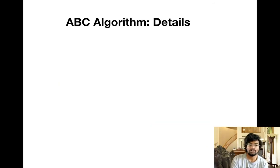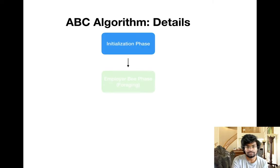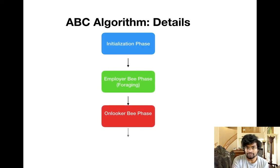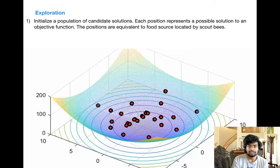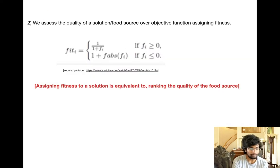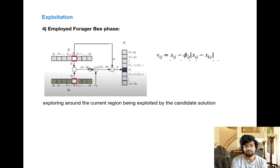Now that you have an intuition of how the algorithm is going to run, let's get into the details. This algorithm basically consists of four phases: the initialization phase, foraging bee phase, onlooker bee phase, and finally scout bee phase. Beginning with the initialization phase, we initialize bees across the solution space randomly and assign fitness to each position, which is analogous to the quality of food the bees are looking for.